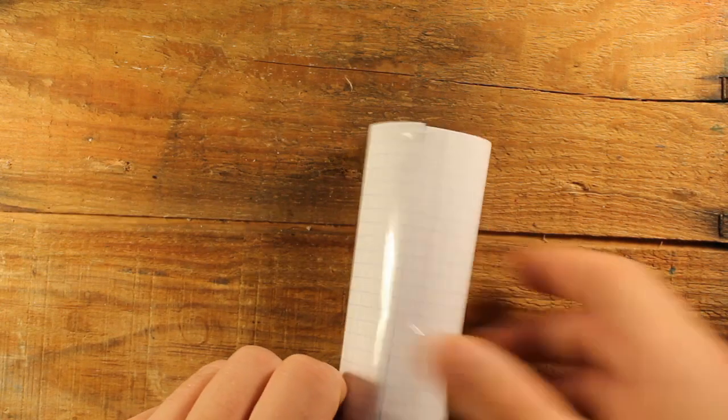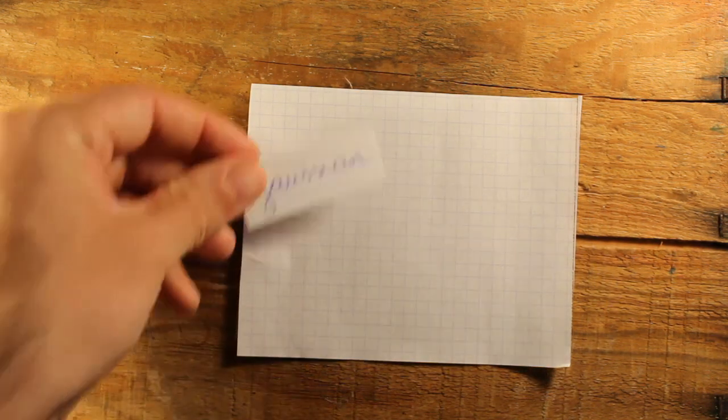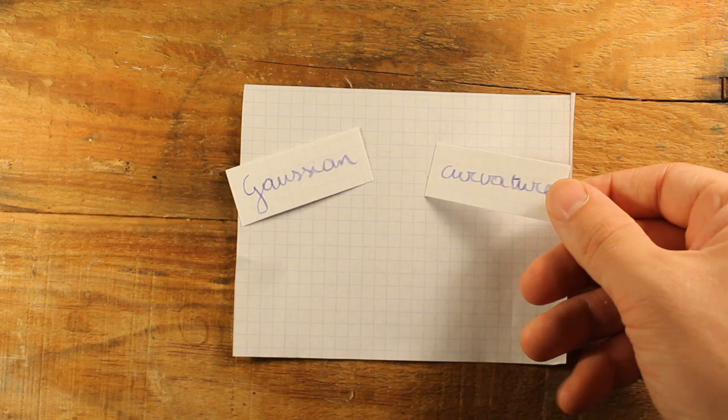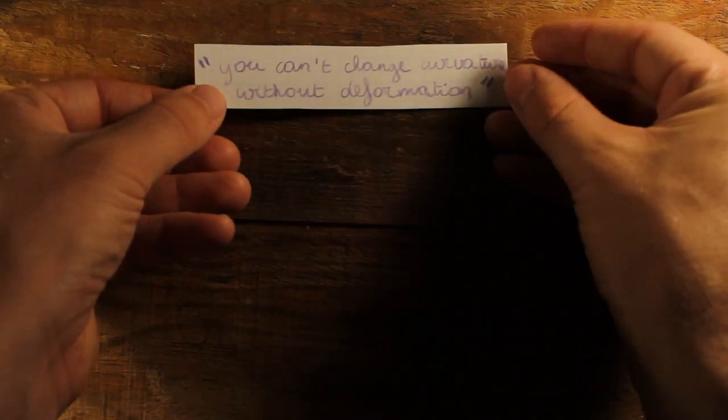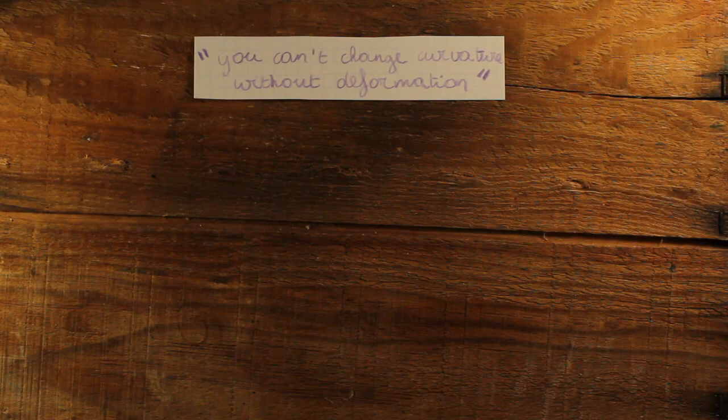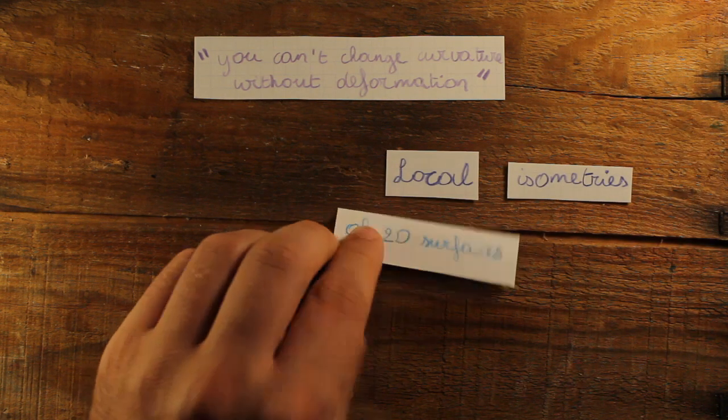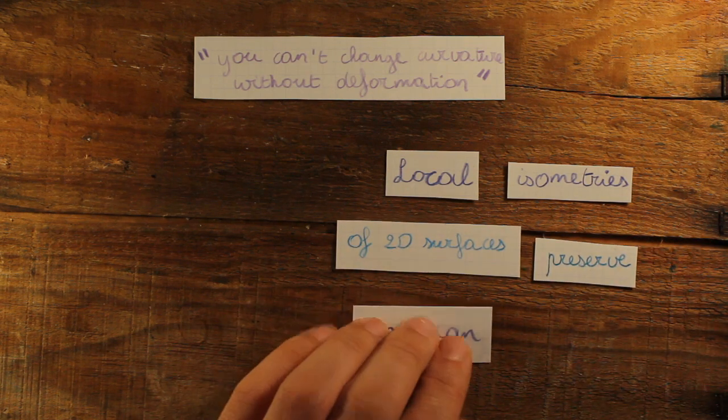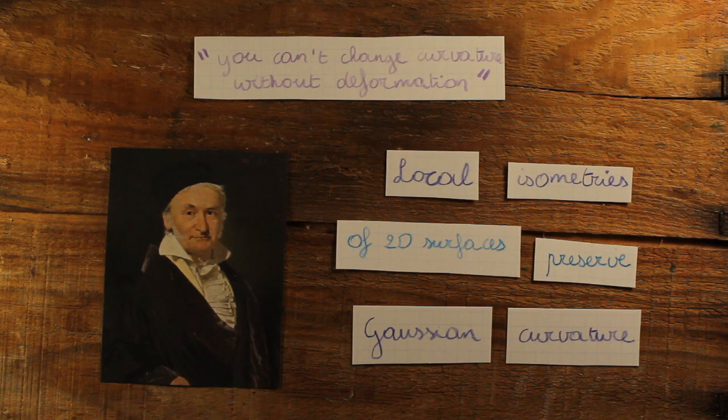because cylinders are curved too, and yet they can easily be turned into a plane without any deformation. However, there is a natural way to define curvature, called Gaussian curvature, such that cylinders too have zero curvature. If you use that definition, our intuitive idea that you can't change curvature without deforming a surface is true, or in mathematical terms, local isometries of 2D surfaces preserve Gaussian curvature. This is the Theorema Egregium, first proven by Gauss, and the goal of this video is to make you fully appreciate it.